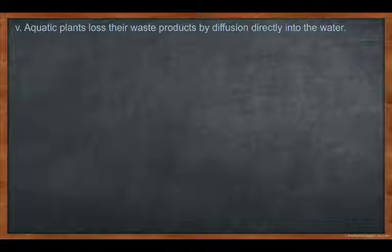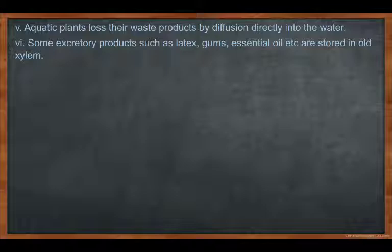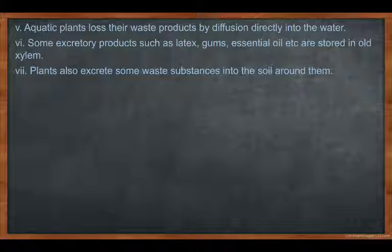Some excretory waste products — latex, gum, rubber, essential oils — are stored in the old xylem, which means the cover of the stem. Plants also excrete some waste products into the soil around them. You can see that around the stem of some plants there are white patches present on the ground — that is the waste product of the plant which is easily removed.